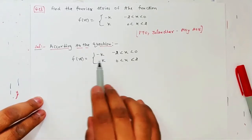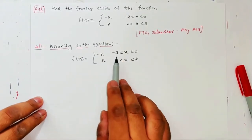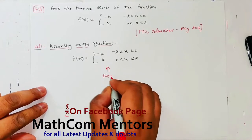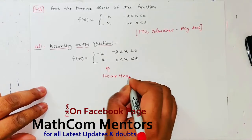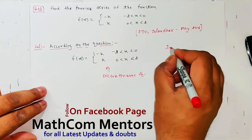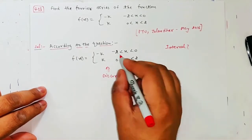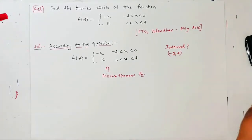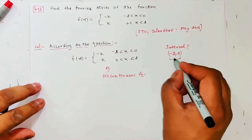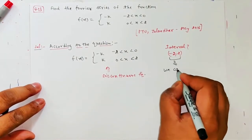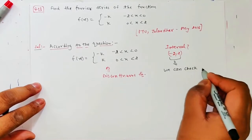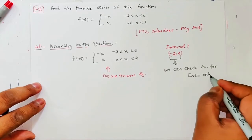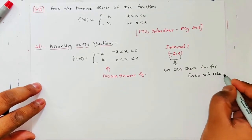Aapko pata hai, sabse pehla kaam question mein aapko nikaalana hota hai f(x). f(x) ki value minus k hai minus 2 to 0, aur k hai 0 to 2. Agar aap dhyan se dekhen, toh yeh discontinuous function hai. Aur interval agar dekhen — interval ka lowest hai minus 2, aur highest hai 2. Toh agar aap dhyan se dekhen, toh jo aapka interval hai woh minus c to c hai. Toh iska matlab we can check the function for even and odd.